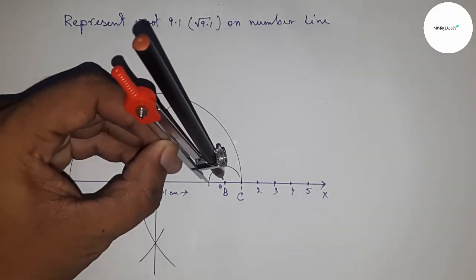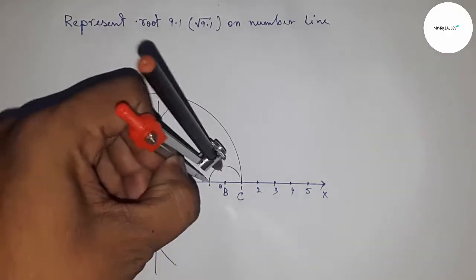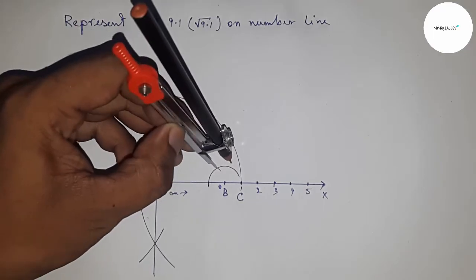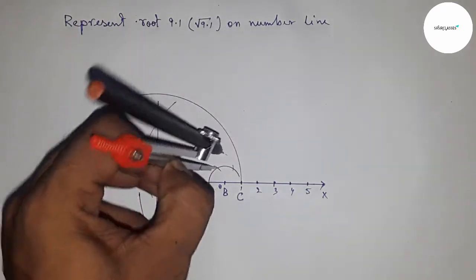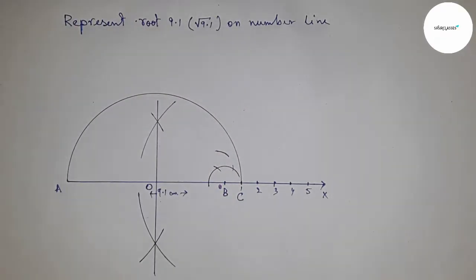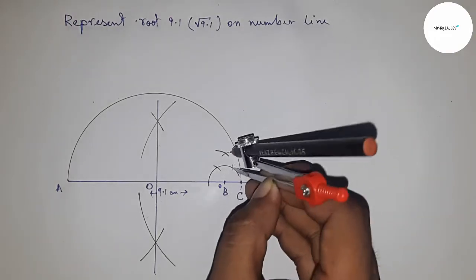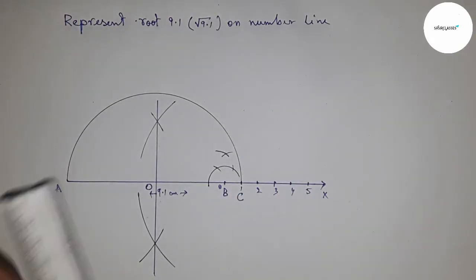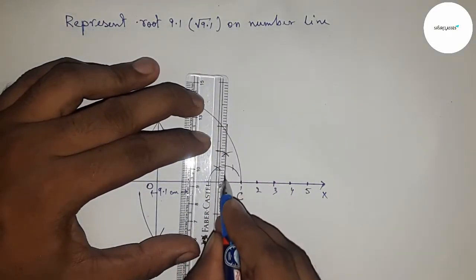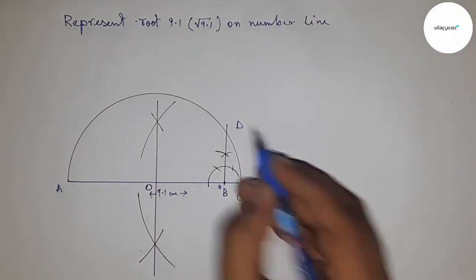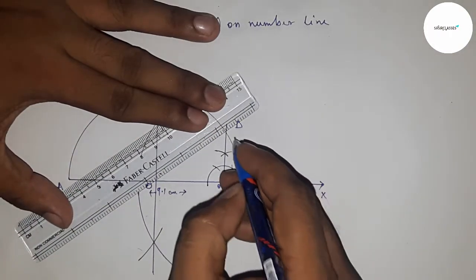If you don't know how to construct a 90-degree angle, watch my video on the channel. Here I'm constructing a 90-degree angle using compass. Now join this line, which meets the semicircle at point D. Join O and D.